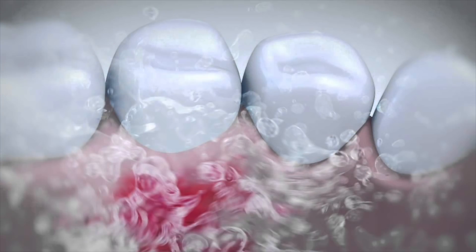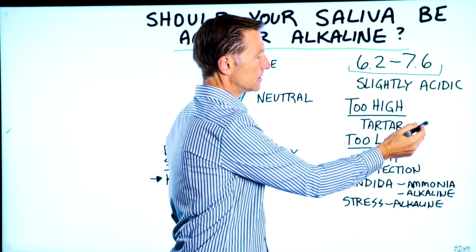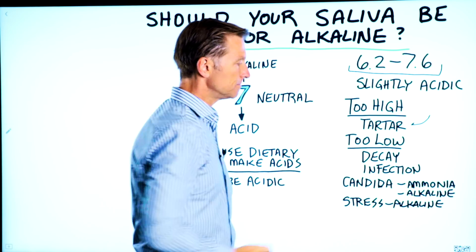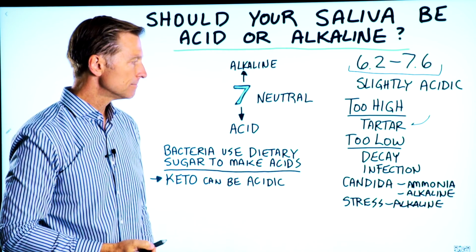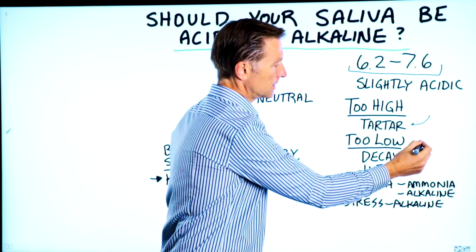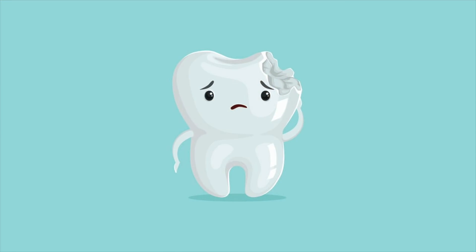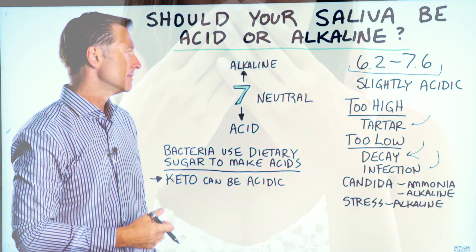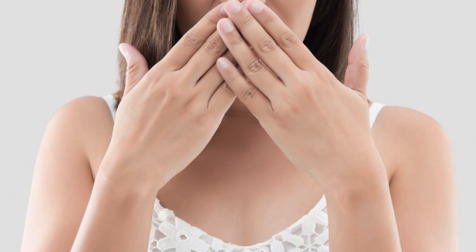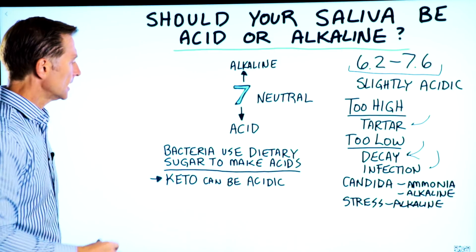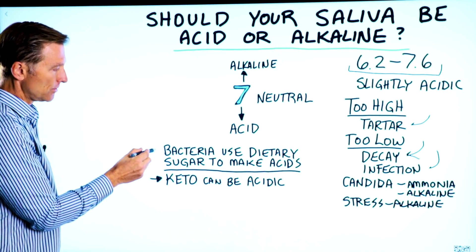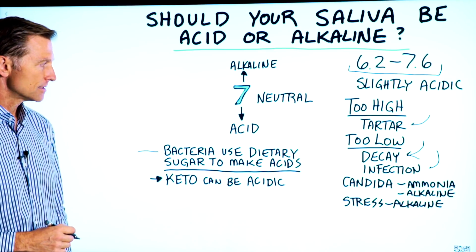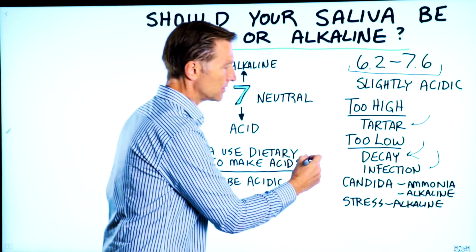If your saliva pH goes too high, you could start developing tartar. If it's too low and you become too acidic, you could start developing dental cavities as well as infections in the gum, bad breath, and a whole bunch of other problems. In your mouth, you have a lot of bacteria that use dietary sugar to make acids, and that's what really breaks down the tooth.